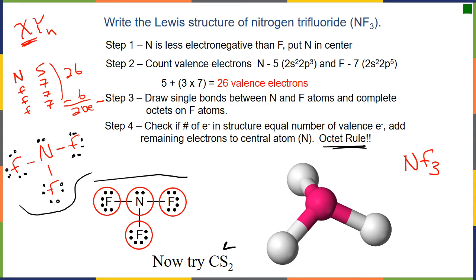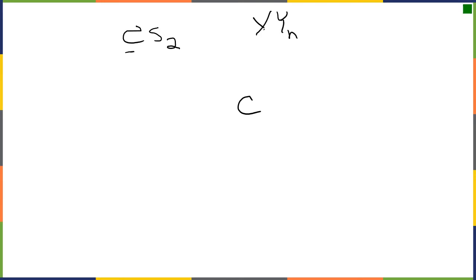Let's try CS2. Carbon is in the middle — not only does the XYn formula tell us that, but it also has a lower electronegativity than sulfur. We count our valence electrons: four from carbon plus two times six from sulfur, for a total of 16 electrons.